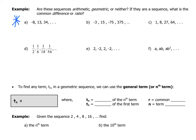Sequence A is arithmetic — it goes up by a common difference of 21. You add 21 to −8 to get 13, and add another 21 to get 34. This is the only arithmetic sequence; none of the others have a constant common difference.